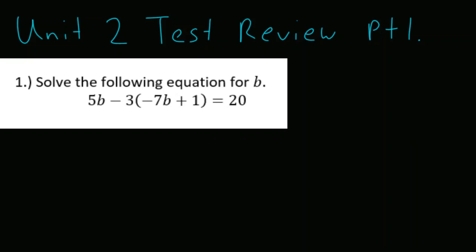Let's take a look at number 1. We have 5b minus 3, and wait a second, that minus 3 is outside a parenthesis. So let's drop our 5b and say, what is negative 3 times negative 7? Well, we know we have a negative times a negative, which is a positive, and of course 3 times 7, which will give us 21b. We have negative 3 times positive 1, which will be negative 3, is equal to 20. And from here, let's finish simplifying by combining our like terms.